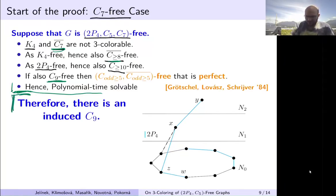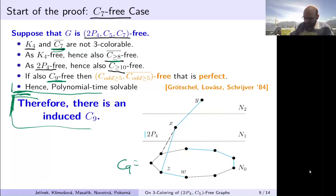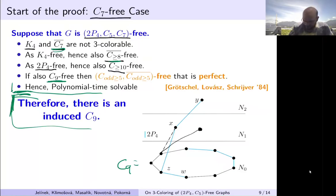We solved the case when in addition there is no C9. So now we can suppose that our graph contains C9. We select C9 as N0 as the base layer. N1 are all the neighbors of C9 and N2 are all non-neighbors of C9. Vertices in N1 have a very constrained type of neighborhood on N0.